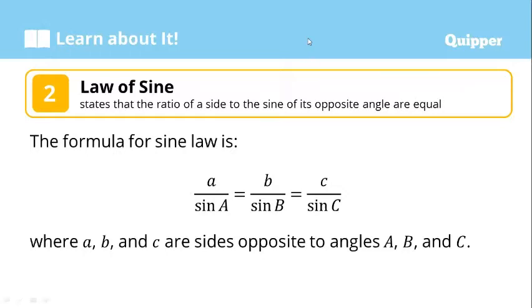The law of sine states that the ratio of a side to the sine of its opposite angle are equal. This is the formula: a over sine A equals b over sine B equals c over sine C, where a, b, and c, the small letters, are the sides opposite to the angles A, B, and C. The capital letters represent the angles.